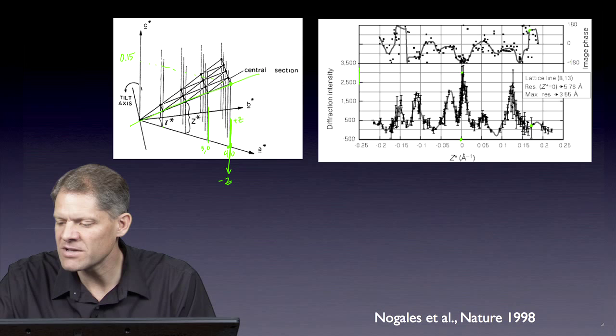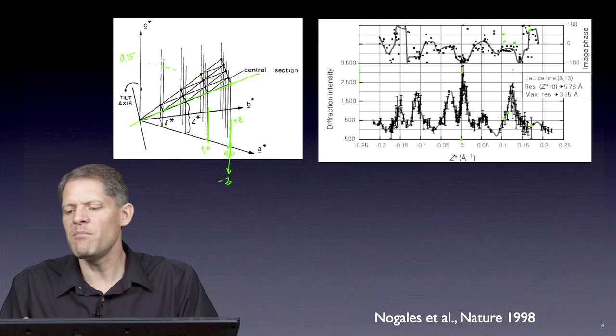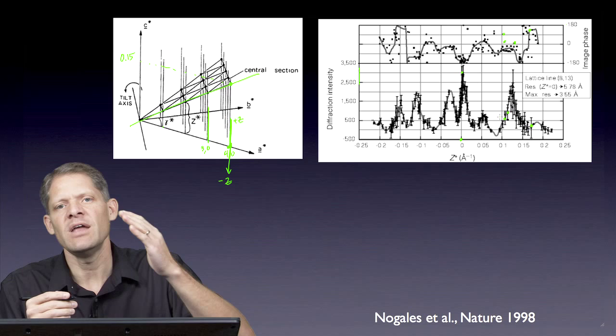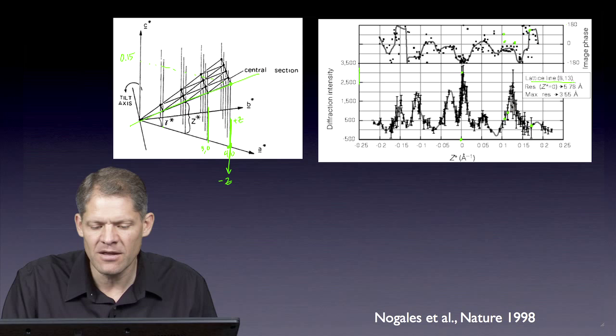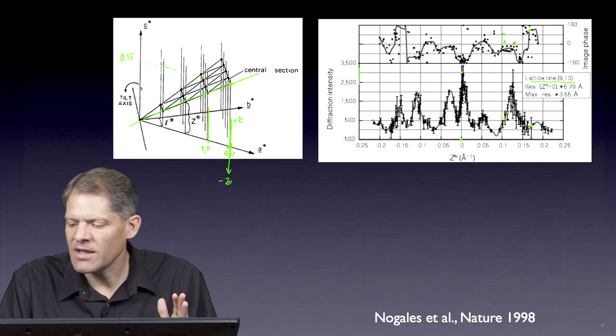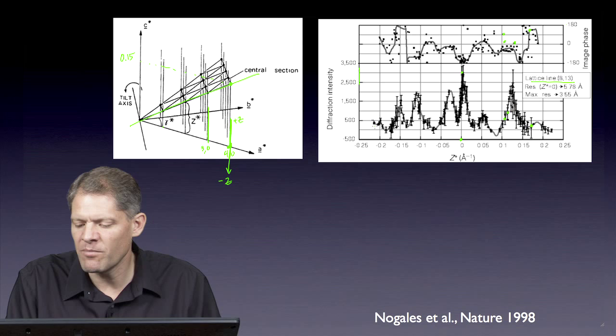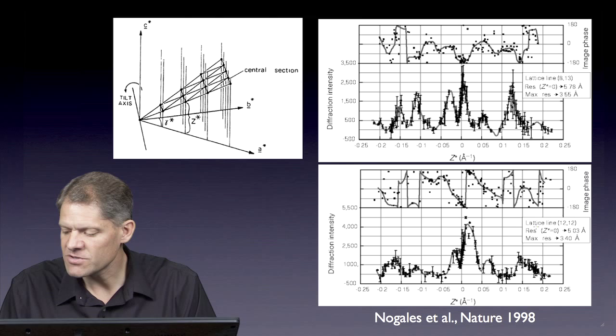Phases vary from minus 180 to positive 180. Each of these dots, each of these is an independent measurement of the amplitude and phase obtained from either an image of the crystal or a diffraction pattern of the crystal. This whole plot is all about just the lattice line 813. 813 is too high resolution to be seen on this schematic. All of this data is about just the lattice line 813, how its amplitude varies from low z to high z and how the phase changes. This procedure is repeated for each lattice line.